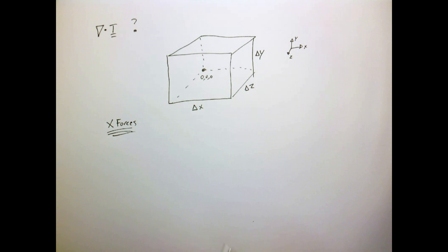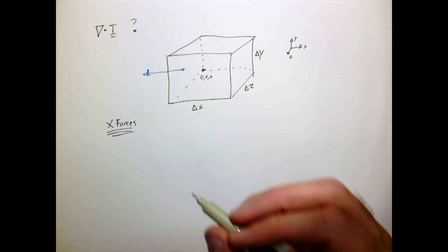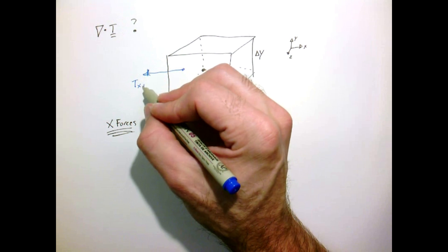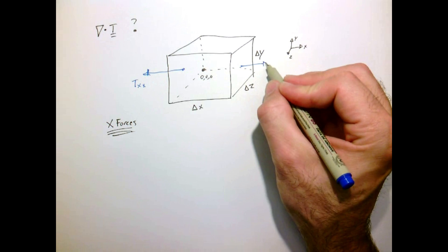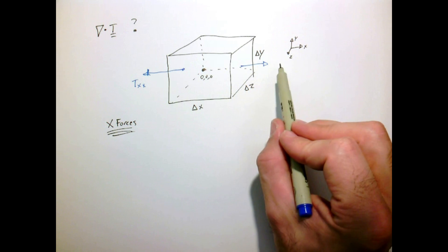So each side is gonna have length. So each face of this has, all six faces of this cube, have stresses. So on this back face, we'll just call that τ_xx. And on this front face, we're gonna have a stress as well, pointing in this direction, sort of outward from the surface.